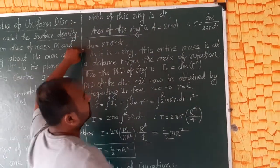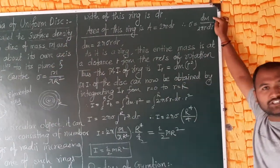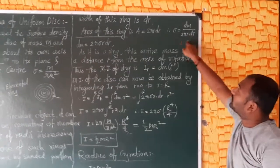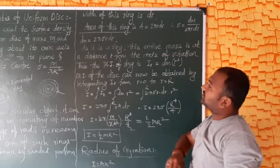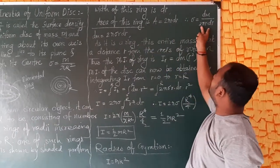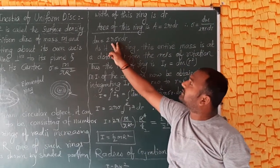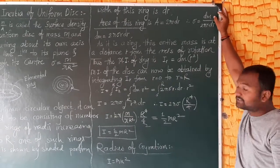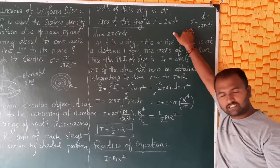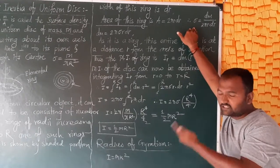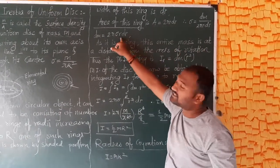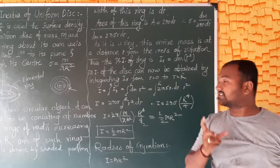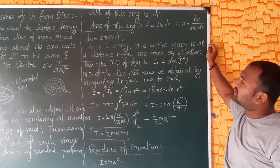So dm is equal to 2 pi r dr into sigma, that is dm equals 2 pi sigma r dr. As it is a ring, this entire mass is at a distance r from the axis of rotation.